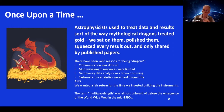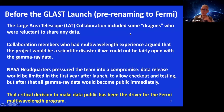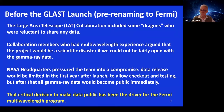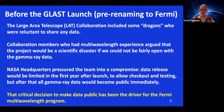With this in mind, we go back to the time when we were planning GLAST — before it was named Fermi, it was called GLAST. The Large Area Telescope collaboration included some dragons who were reluctant to share any data. These were people who had no experience in doing multi-wavelength astrophysics. But the collaboration members who had multi-wavelength experience argued the project would be a scientific disaster if we could not fairly share the gamma-ray data.